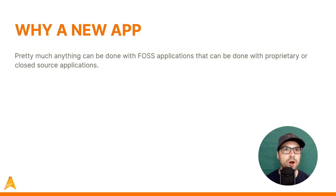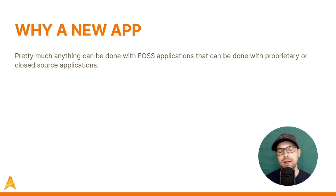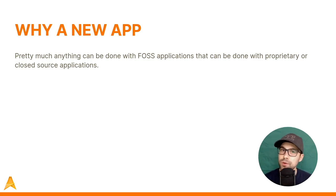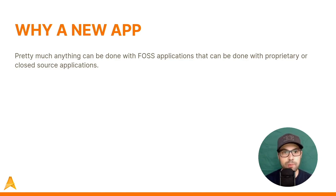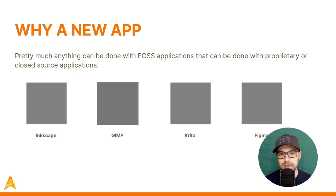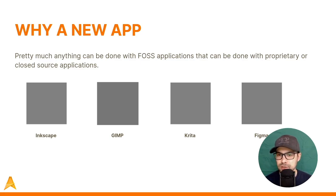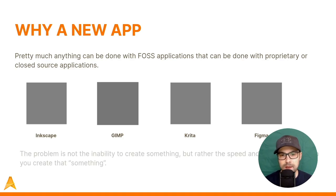A very common question is: why a new app? Do you really need a new app to design something? The answer is not really — yes and no. You can absolutely achieve the same visual result with free and open source software as with closed source applications. A gray rectangle will look identical regardless of the application used, whether it's open source, proprietary, an Electron app, or a native app.